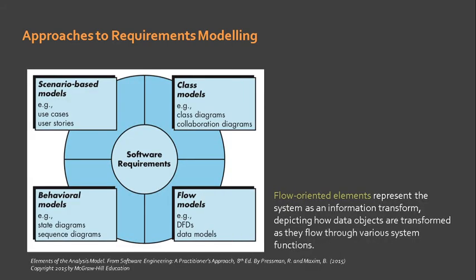Lastly, we have the flow models. Flow-oriented elements represent the system as an information transform, depicting how data objects are transformed as they flow through various system functions. The flow model is a representation of how data is processed in the system. Tools that can be used in flow models include DFD or the data flow diagram, and data models such as ERD — entity relationship diagrams — which was discussed in your database subject.